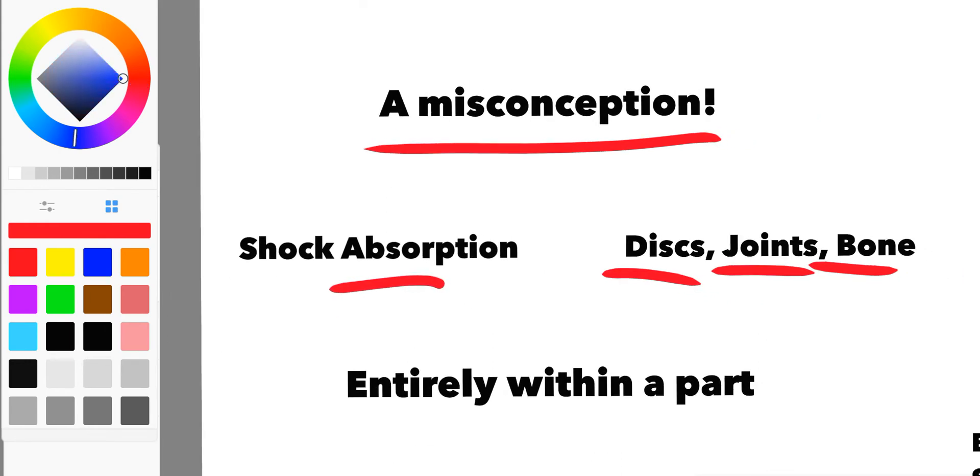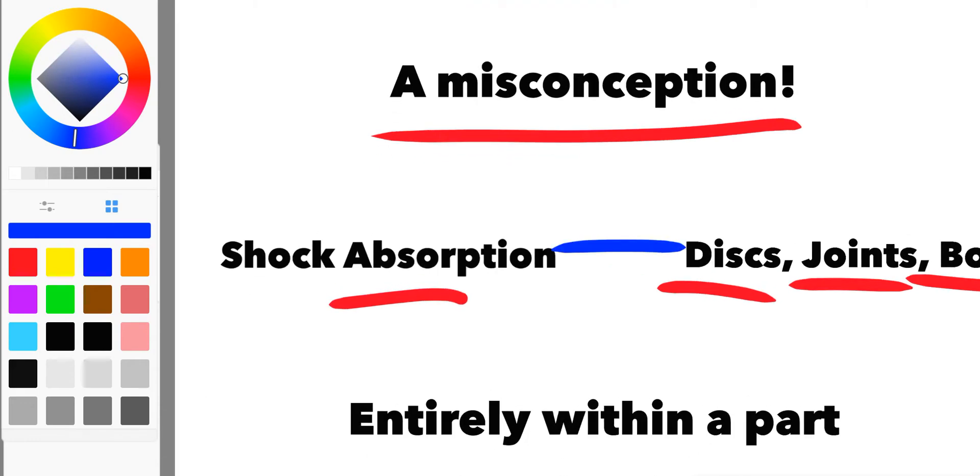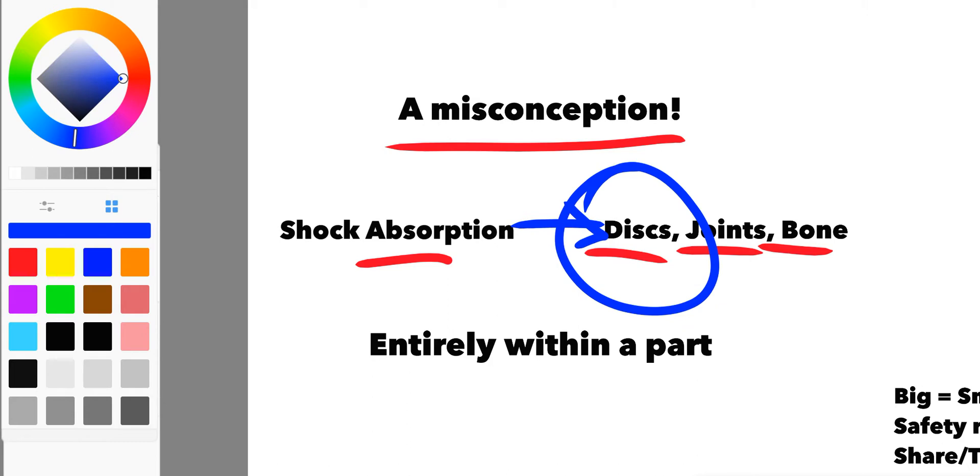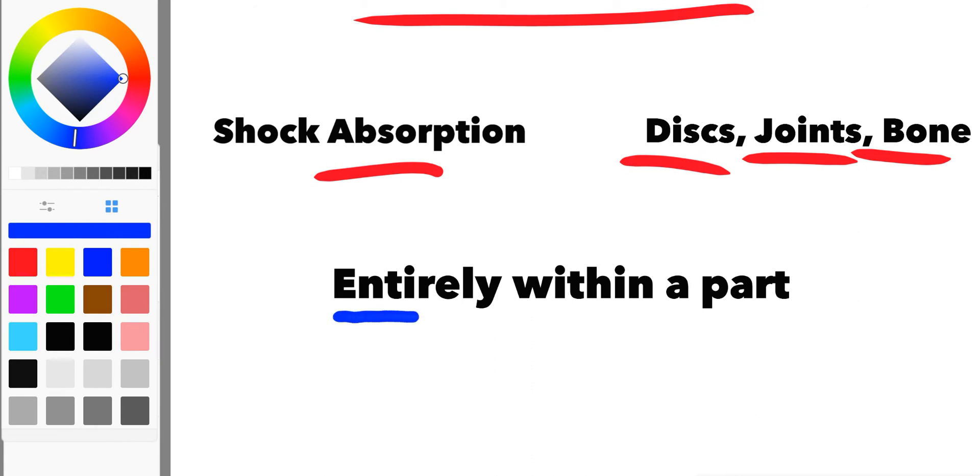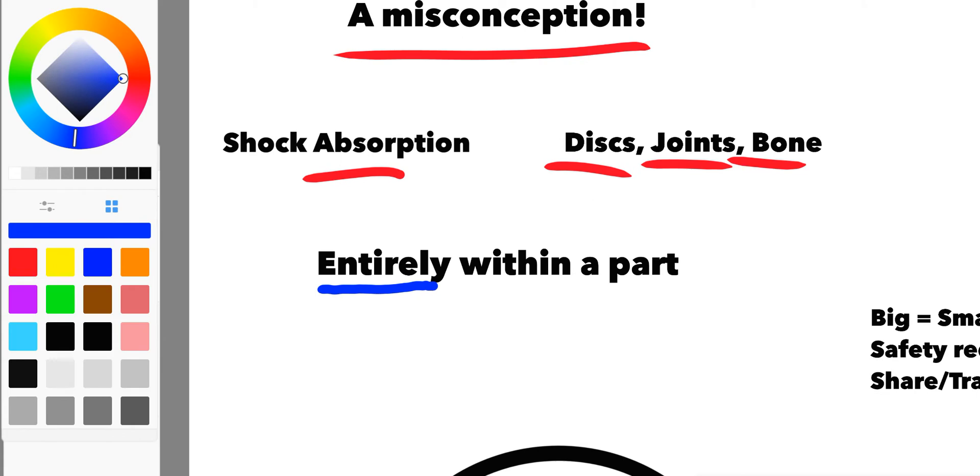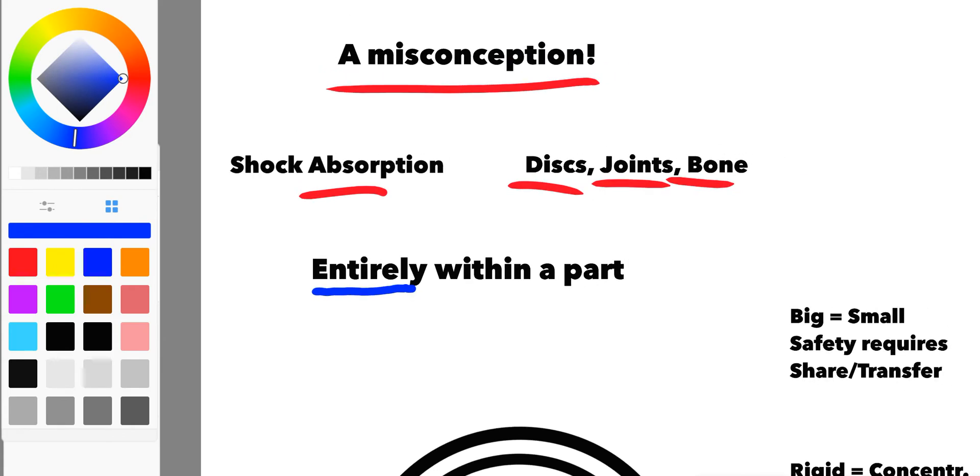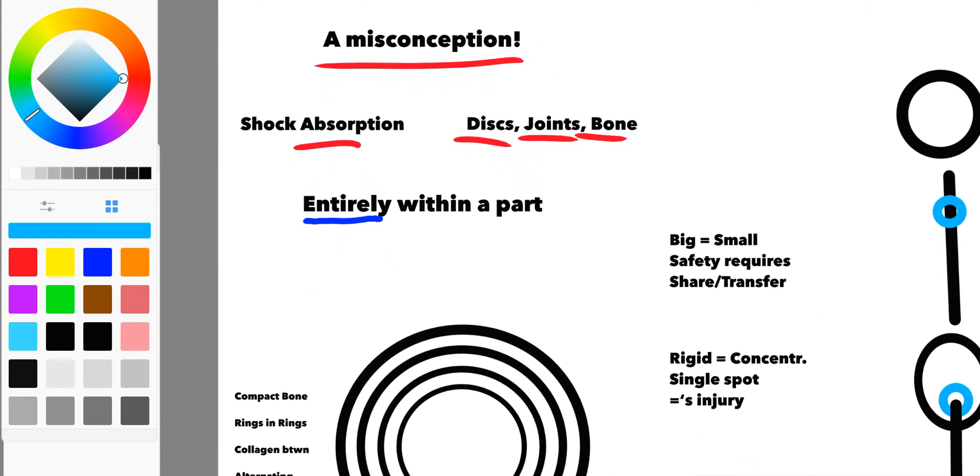So force comes in on one of these things and then is gone within that same structure. We could argue this is happening, it certainly is to some extent, and we could even say it's connected all the way down to a cellular level. But many of the structures we're supposedly dissipating or shock absorbing with really don't have the capacity to take on that kind of extreme force. They're actually made in such a way to stop that from happening entirely.